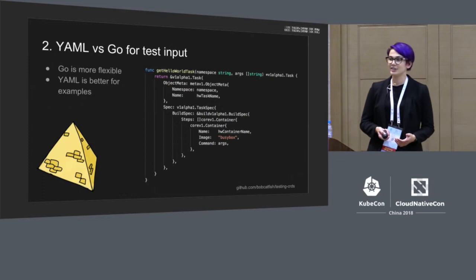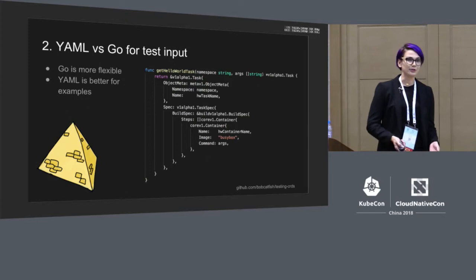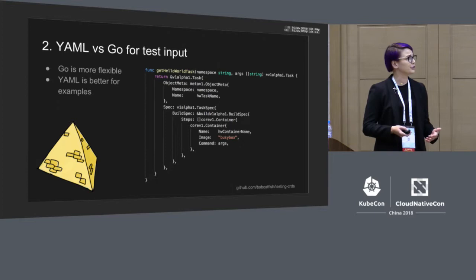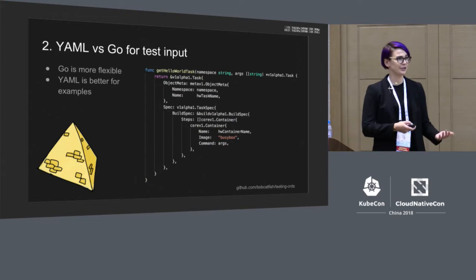The next recommendation is to declare your test inputs in Go instead of YAML. YAML is more readable and makes sense to provide as examples for your users, but your tests will probably need to manipulate your CRDs and change some fields, like the namespace. In order to do that with the YAML version, you have to load and parse it, which becomes messy and hard to understand. So I recommend just declaring it in Go.